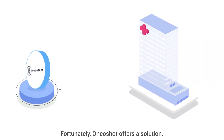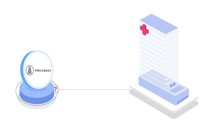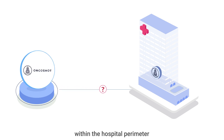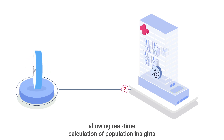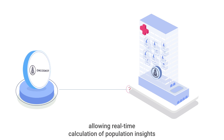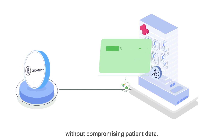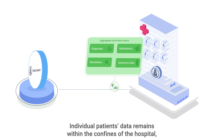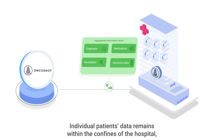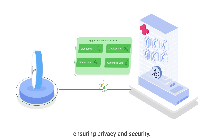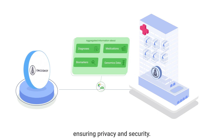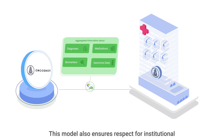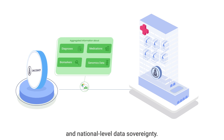Fortunately, OncoShot offers a solution. It can securely deploy its federated data module within the hospital perimeter, allowing real-time calculation of population insights without compromising patient data. Individual patients' data remains within the confines of the hospital, ensuring privacy and security. This model also ensures respect for institutional and national-level data sovereignty.